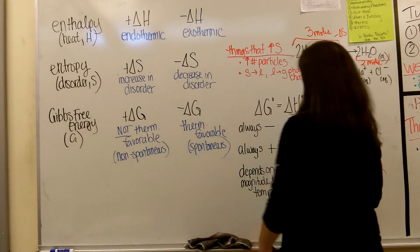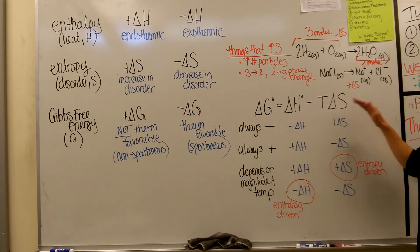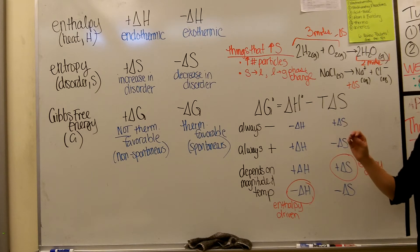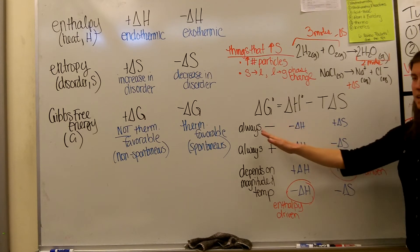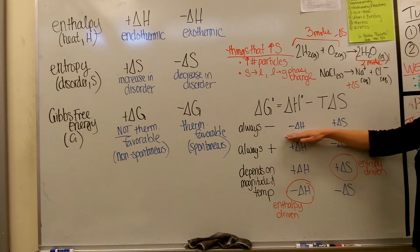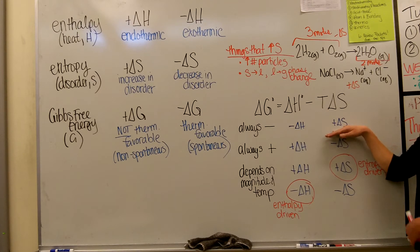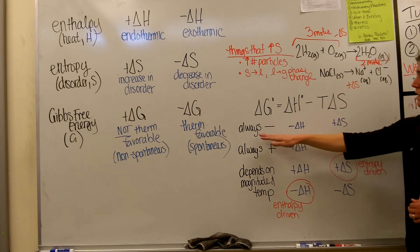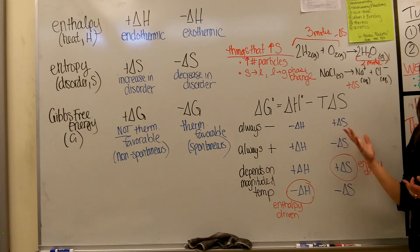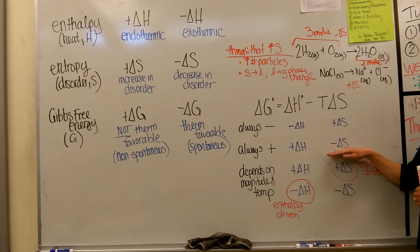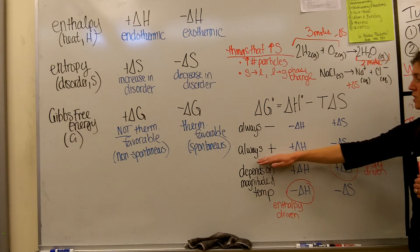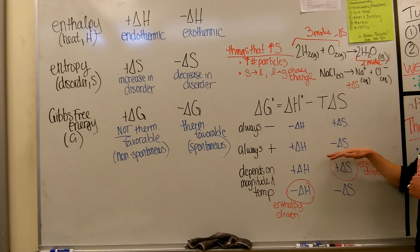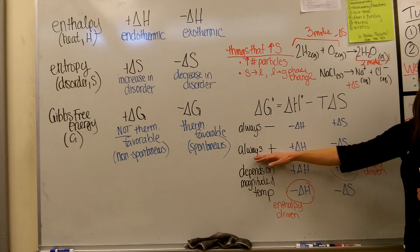Thinking about how they are related, look at this equation: delta G equals delta H minus T delta S. In order for a reaction to be energetically favorable, our delta G value needs to be negative. If your delta H is negative (exothermic) and your delta S is positive (increase in disorder), both are energetically favorable, and your delta G will always be negative regardless of the magnitude of these values. If your delta H is positive and your delta S is negative, delta G is always positive — this reaction will never be spontaneous, no matter the temperature or other conditions.